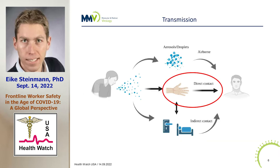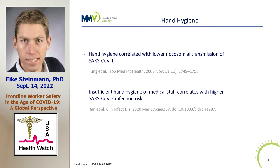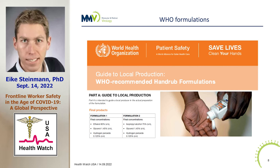Let's look at the second pathway. As I mentioned, nosocomial transmission and hand contact — what do we know? We know hygiene and hand washing is an important measure. We have good examples already from SARS-CoV-1 that hygiene correlates with lower nosocomial transmission. And also in SARS-CoV-2, insufficient hand hygiene of medical staff correlated with higher infection risks. So here in a hospital environment, it's quite clear that hands, as for other pathogens, play a role in transmission. And we now would like to share our first study.